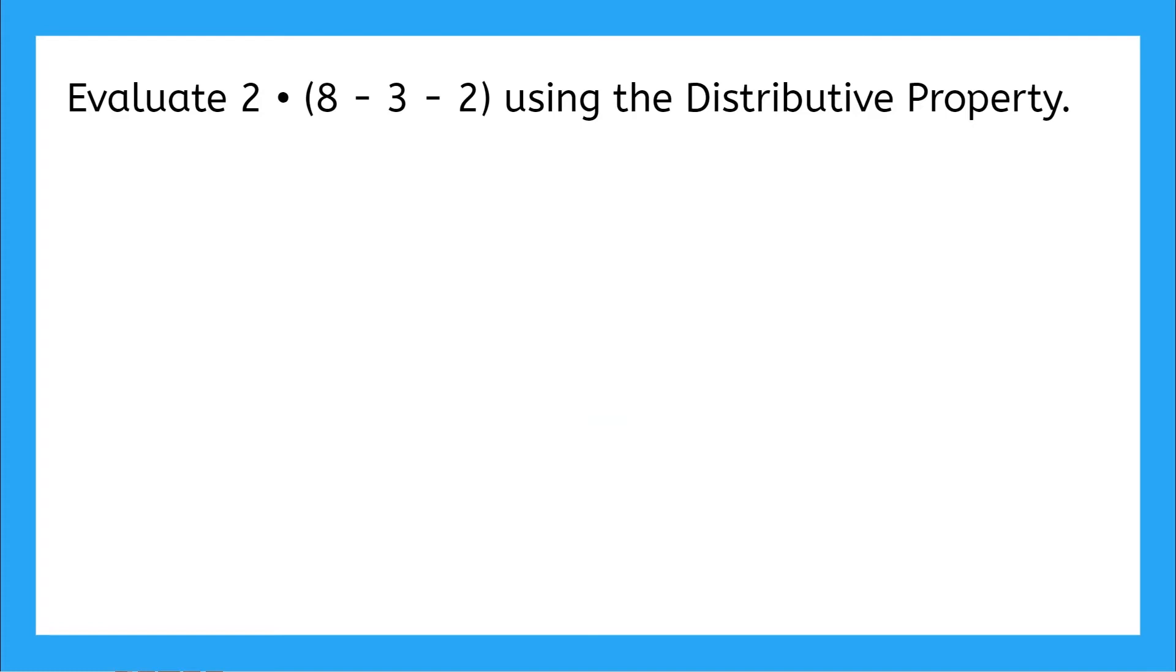It says evaluate 2 · (8 - 3 - 2) using the distributive property. So right away, I know that I am not using order of operations. I can go straight to distributing what is outside my parentheses to what is inside my parentheses. But let's rewrite this first to cozy up our 2 and our parentheses. So it's really clear. Remember, this bullet here just means multiplication. So I can just write this 2 right next to the parentheses and it'll look like 2(8 - 3 - 2).